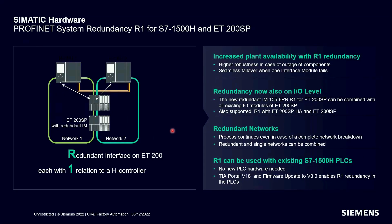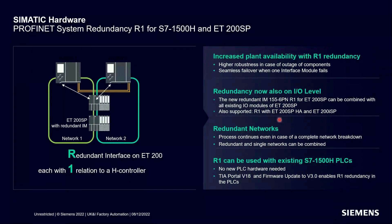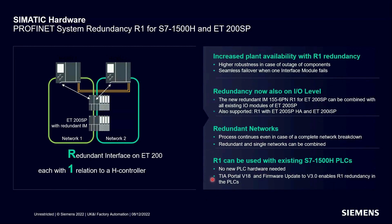There's a hot standby link between the CPUs, and we now have new fiber optic sync modules that can go up to 40 kilometers — useful for tunnels or any application requiring extreme distances between CPUs. This R1 redundancy is compatible with ET200 SP, ET200 SP HA, and ET200 ISP. Existing S7-1500H systems just need a firmware upgrade to version 3, and R1 and S1 redundancy can both be simulated in PLC SIM Advanced V5.